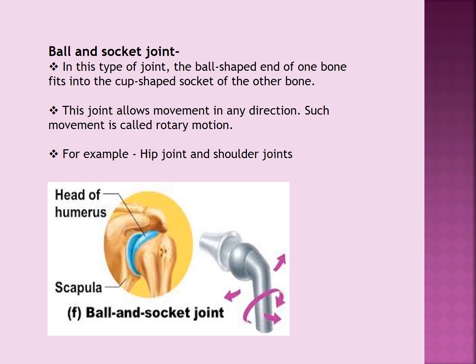You can even try yourself — try to move your arm. You can find that you can move your arm 360 degrees. Such movement is known as rotary motion. Ball and socket joints are present in your hip joint and also in your shoulder joint.